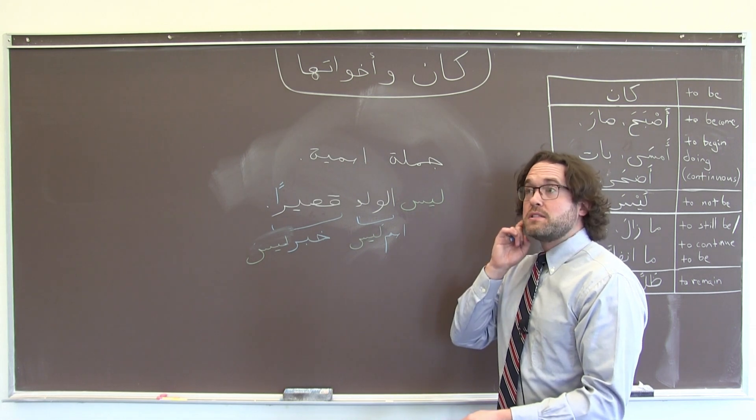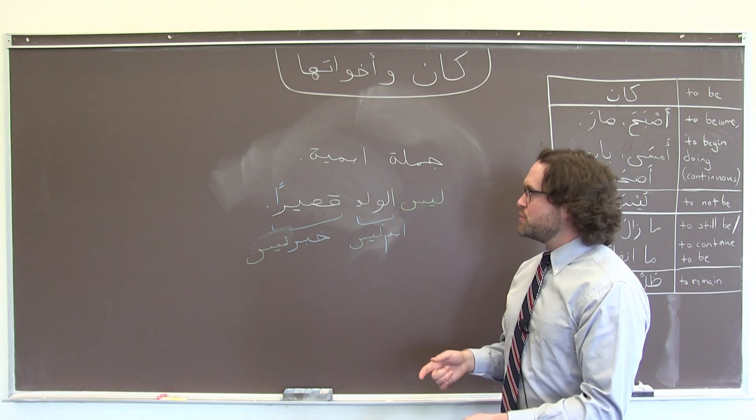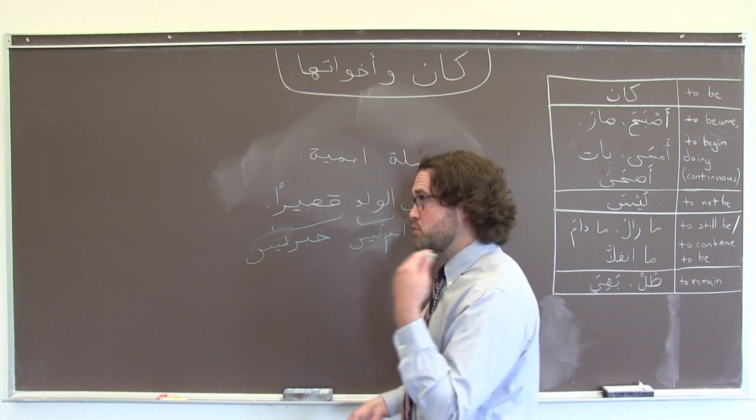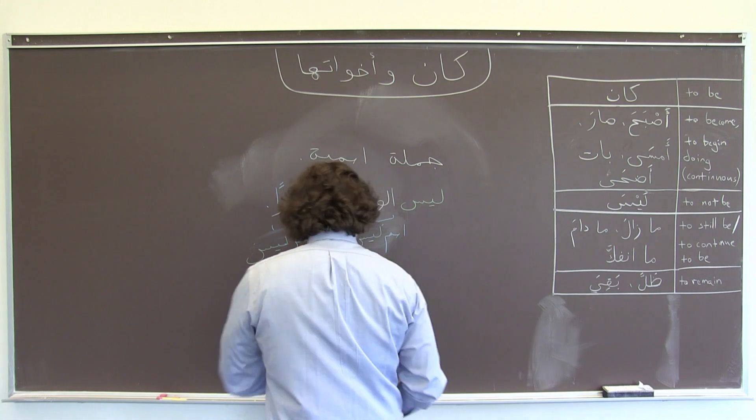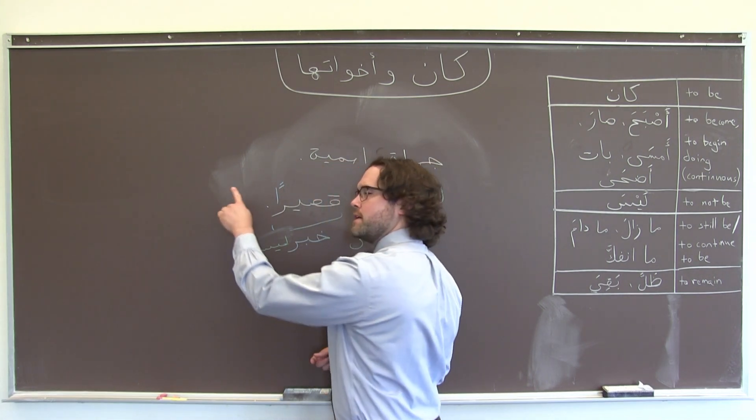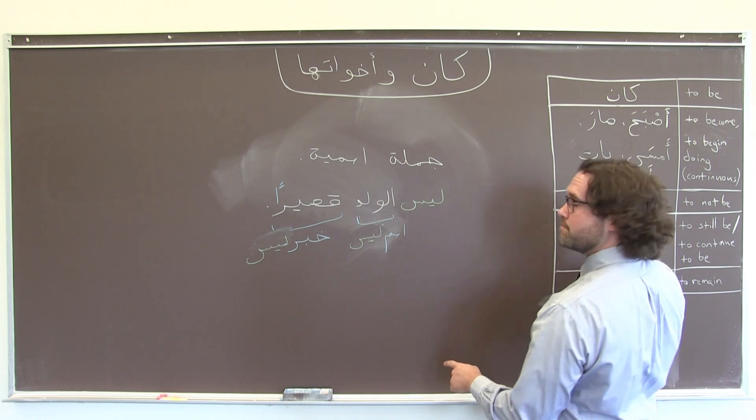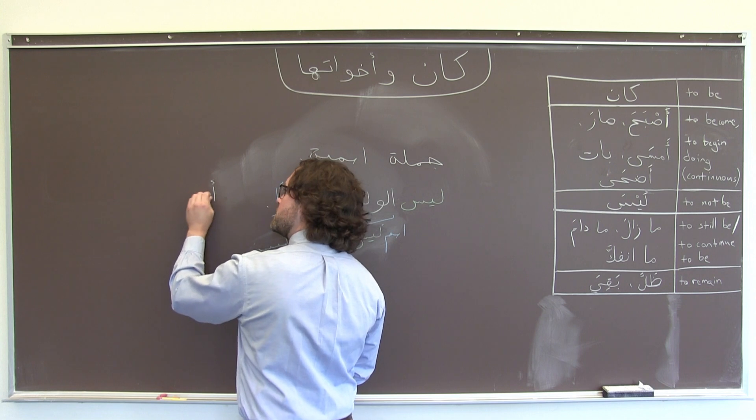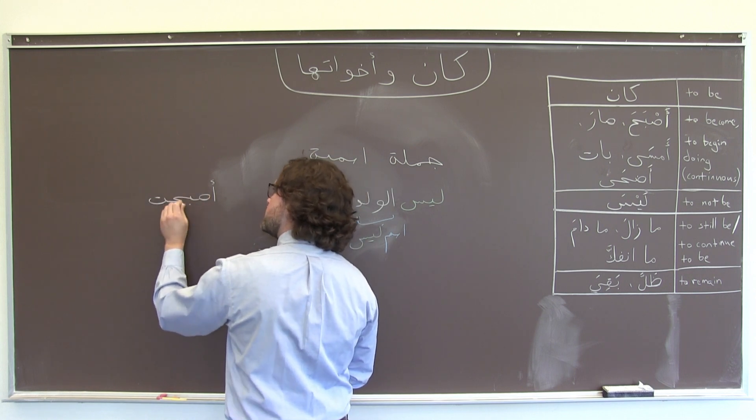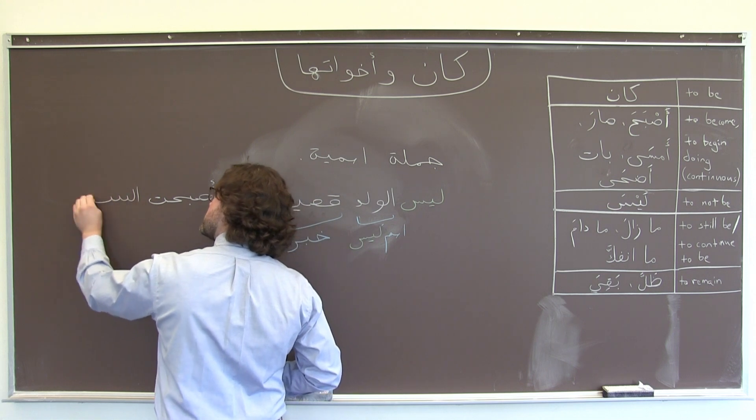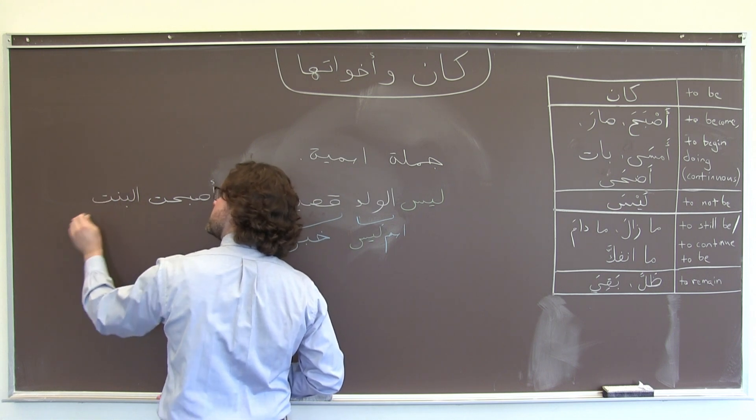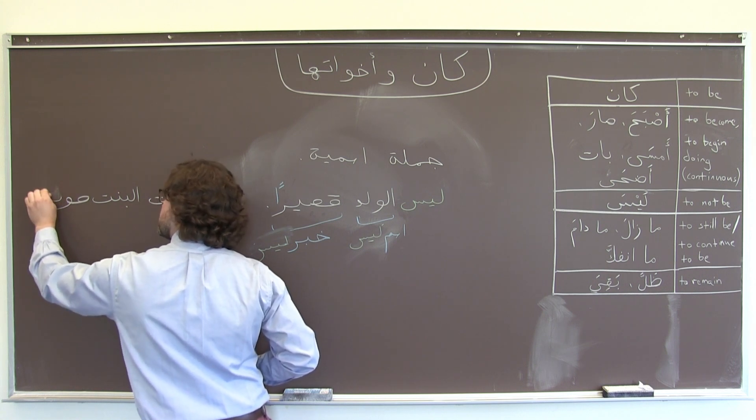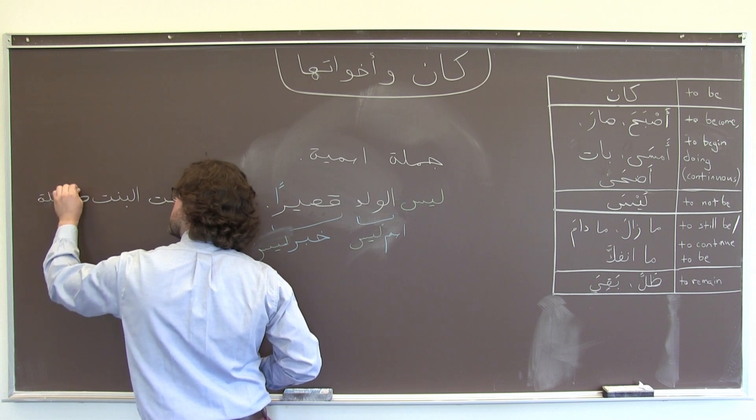Let's look at another example. If we wanted to say, since we're talking about children and their relative heights, the girl got tall, the girl became tall. Maybe she was short, now she got tall. I would take my verb for becoming or turning into something, and say أصبحت البنت طويلة.